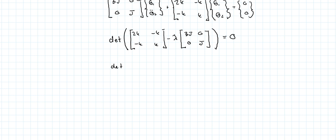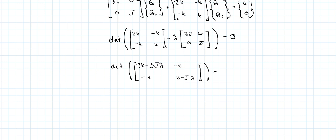Expanding the determinant — this product minus this product — gives us: (2K - 3Jλ)(K - Jλ) minus (-K)(-K) = (2K - 3Jλ)(K - Jλ) minus K² equals zero.